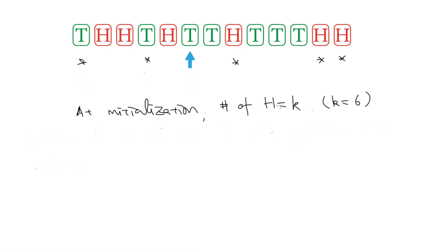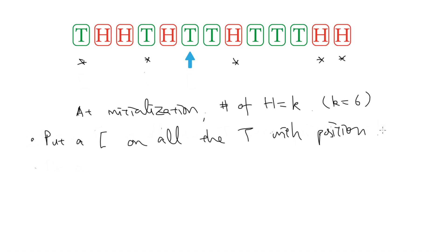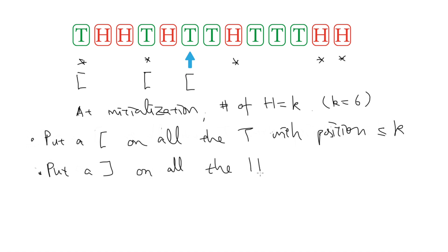Now let me introduce some additional notation to help the analysis. First, we put a left bracket on all the tails with position smaller or equal to k. Here k is the initial number of heads in the sequence. So we put a left bracket here, here and here, including the initialization position. So it is clear that these positions correspond to the change of direction on the left-hand side. Similarly, we are going to put a right bracket on all the heads with positions strictly larger than k. Then they correspond to the change of direction on the right-hand side.